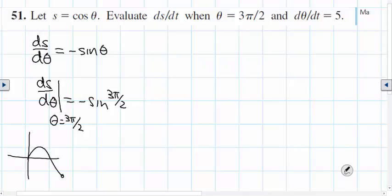I think that's negative 1. Sine of 3π/2 is negative 1. Negative of negative 1 is positive 1. So ds/dθ is positive 1.